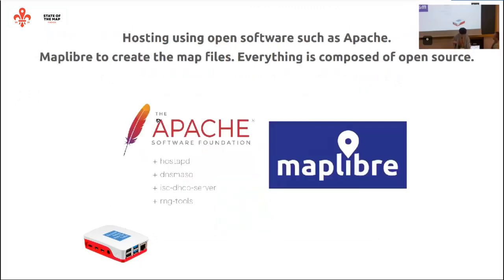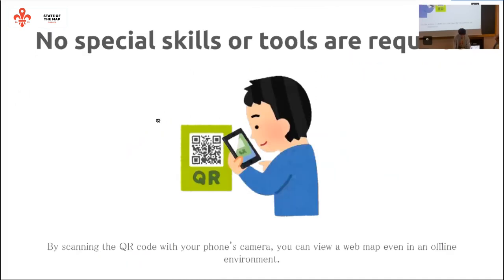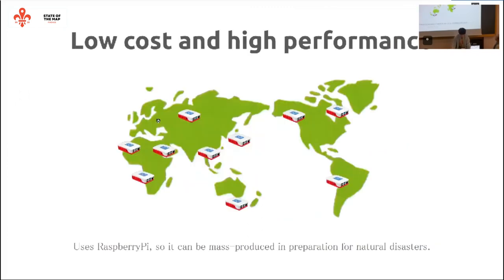We host using software such as Apache and also use a map library to create map files. An important point is that everything is composed of open source software. No special skills or tools are required — just scan a QR code. The Raspberry Pi is low cost but high performance.